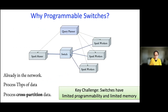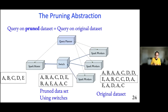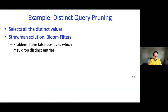We face key challenges: limited memory to process large amounts of data, and limited programmability to support diverse database query operations. That's why we introduce the pruning abstraction. The key idea is that the switch doesn't need to do the full query — instead it does its best effort, whatever operations it can support and whatever amount of data it can process. We need algorithms that achieve a good pruning property: queries run on the original dataset and the pruned dataset should give equal results. The switch speeds up part of the query without changing the result.